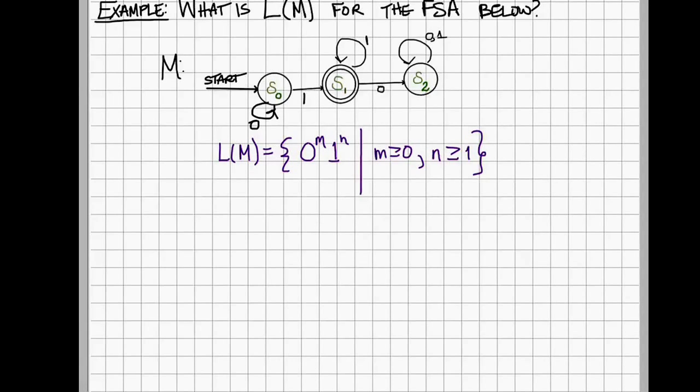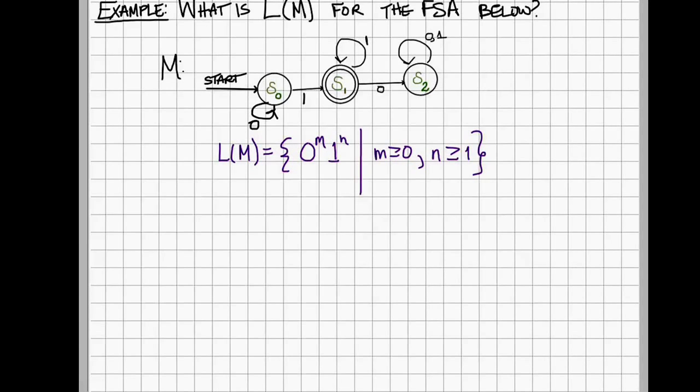1 to the n, where the exponent is telling you how many times that symbol is repeated in the string. And m, in this case, can be 0.